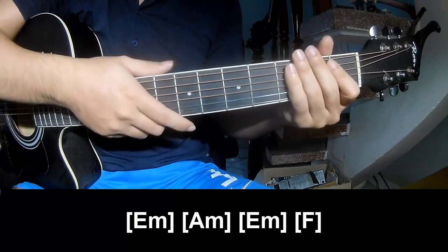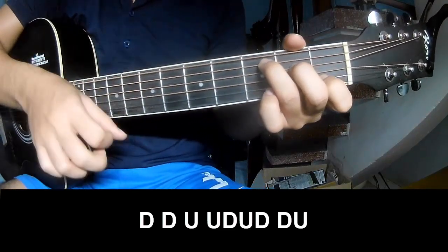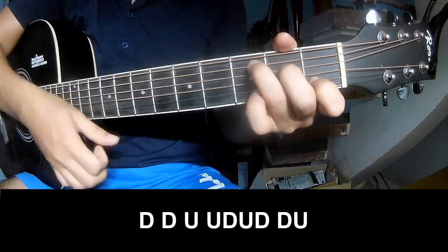And you play in the same way for the verse. The strumming pattern is: down, down, up, up-down-up, down, up.